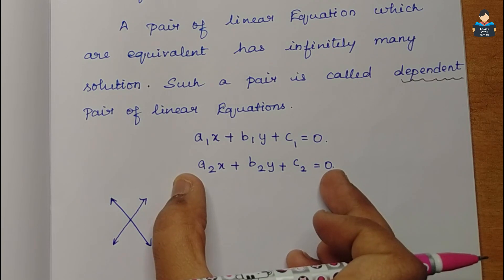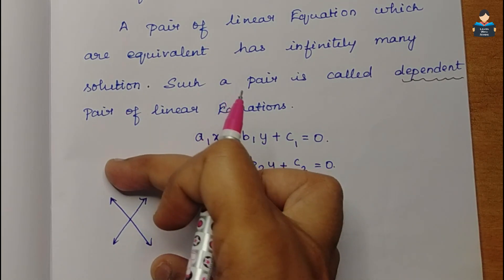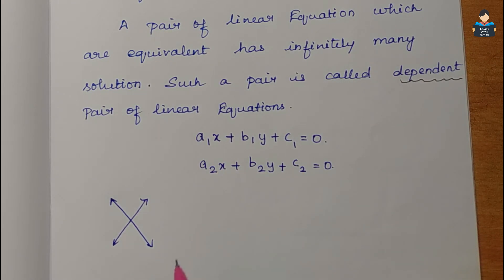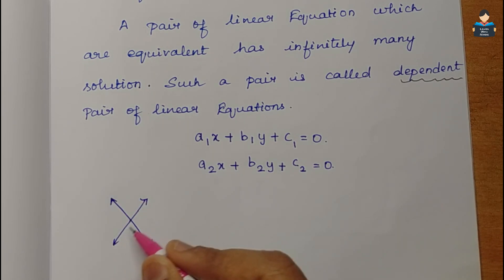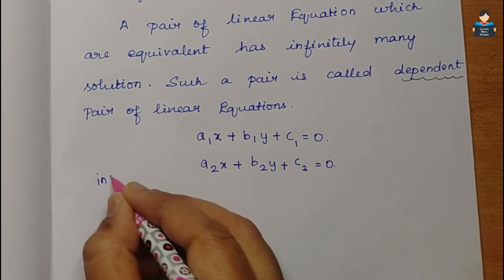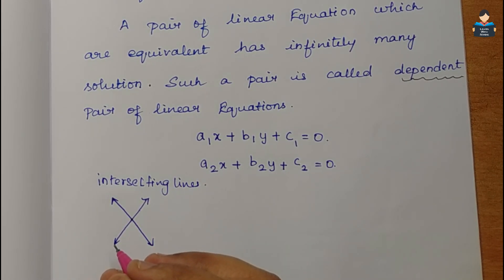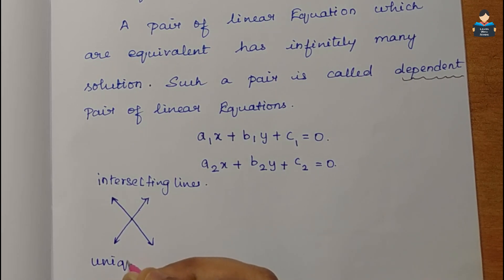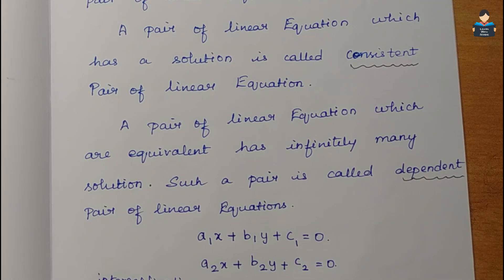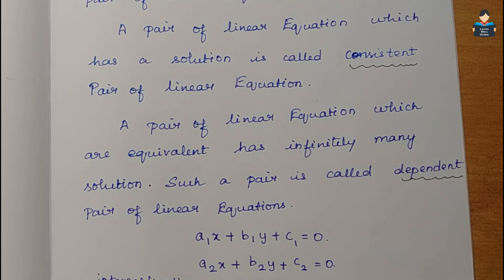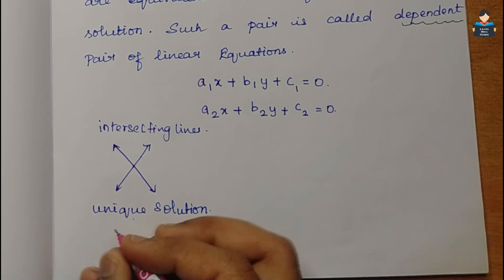The equation a1x + b1y + c1 = 0 is the equation of one line, and a2x + b2y + c2 = 0 is the equation of another line. When we solve these on a graph and plot the two lines, if we see intersecting lines, it has a unique solution - that is consistent.